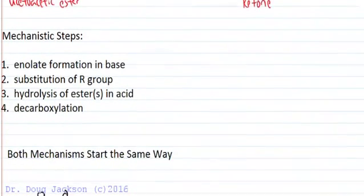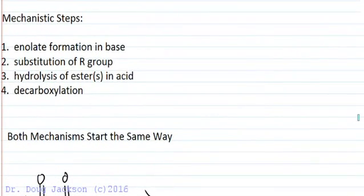So let's look at the mechanism. We know what we're after. Now let's look at the mechanism to see how we get there. Same mechanistic steps for both reactions. We form the enolate in base, we substitute the R group on.